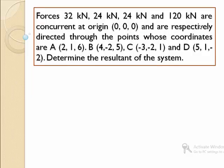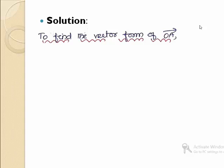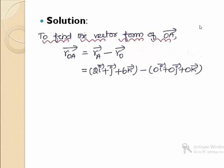In the step-by-step procedure, we use the force vector formula. We start the problem by describing the position vectors. The origin position vector RO is 0i + 0j + 0k. Similarly, for positions A, B, C, and D, we describe their position vectors using the given coordinates. To find the vector form of the first force, the position vector along OA is RA minus RO, giving ROA = 2i + j + 6k.